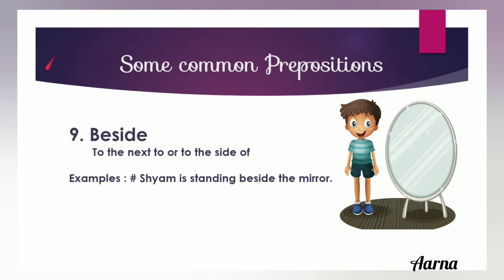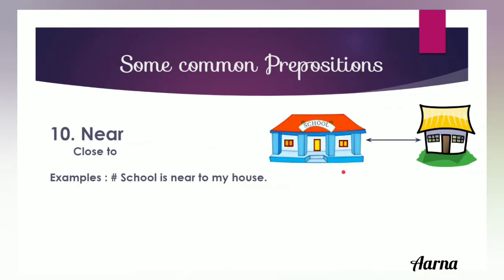The ninth preposition is 'beside', meaning next to or to the side of. When an object is just to the side of another object, we use 'beside'. For example, the boy is standing just to the side of the mirror, so we use 'beside'. The next preposition is 'near', used for close to. For example, the school is near the house, so we use 'near'.